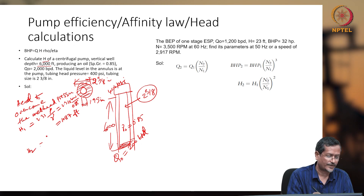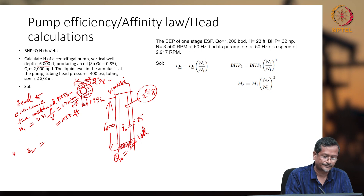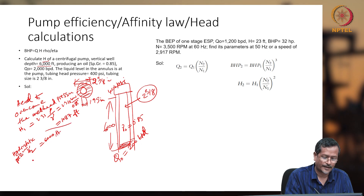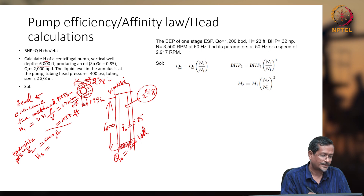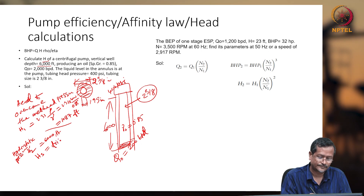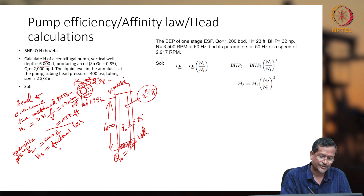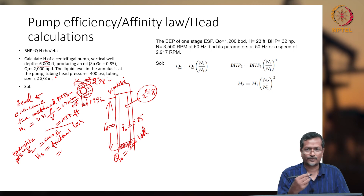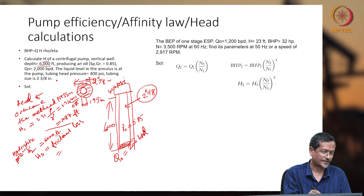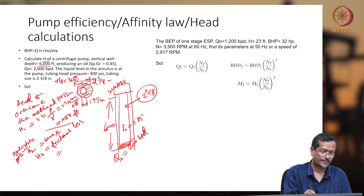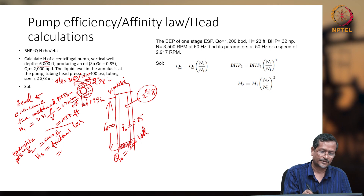Now calculate H2, which is hydrostatic pressure — H2 is 6000 feet, already given. And H3 is the frictional loss.